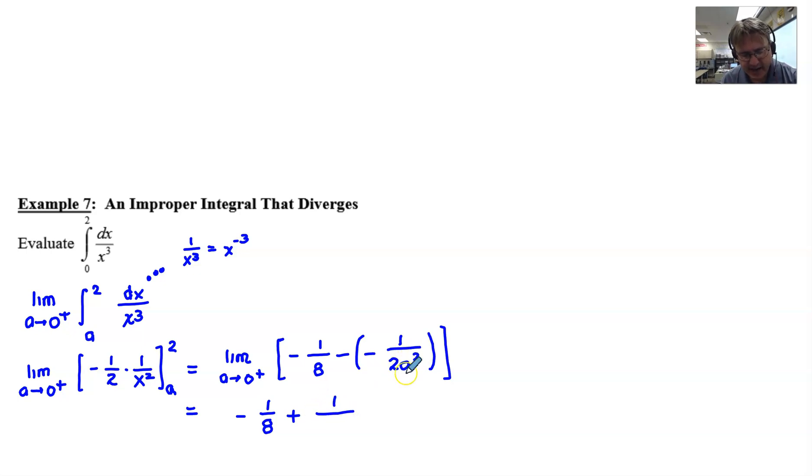We're going to let this a approach 0 from the positive side, although it really doesn't matter in this case since a is going to be squared. As this a gets super small, squares itself, which probably is going to make it get even smaller because it is a number probably very close to 0. When you square those things, they get smaller. Multiply by 2, that's going to double a very small number, and we're still going to get something that's very small right here.